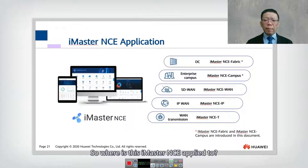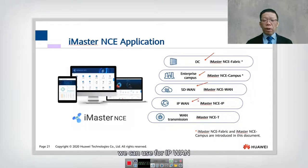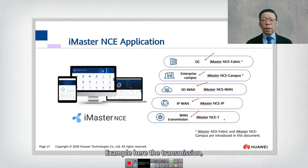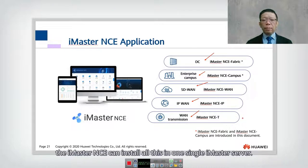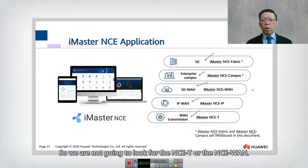iMaster NCE applies to multiple environments. For data centers, you use iMaster NCE Fabric. For the enterprise campus, it's iMaster NCE Campus. For SD-WAN and IP-WAN, there's iMaster NCE IP, and for transmission there is iMaster NCE-T. These are modular products for different environments — some enterprises may not use transmission, for example. All modules can be installed on a single iMaster server. For our discussion, we focus on iMaster NCE Fabric and iMaster NCE Campus, not NCE-T or NCE-WAN.